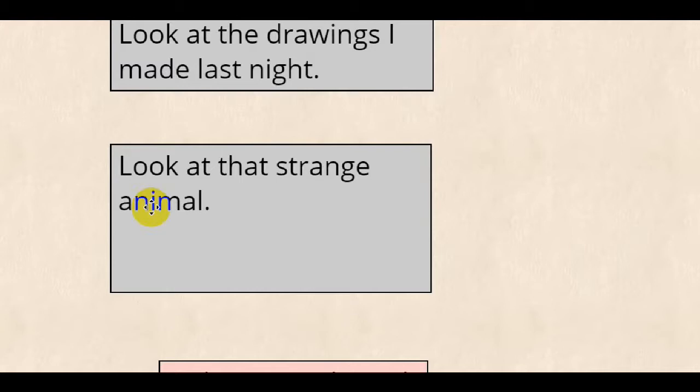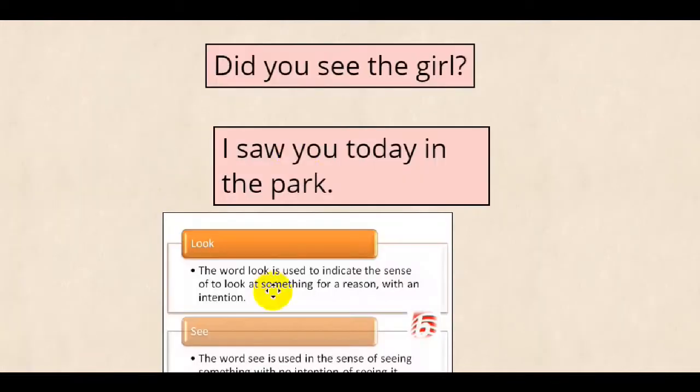But what about see? Here are some examples. Did you see the girl? I saw you today in the park. So the word see here means what? Yeah. To see. Just see. What's the difference between look at and see as you figure it out from the examples?